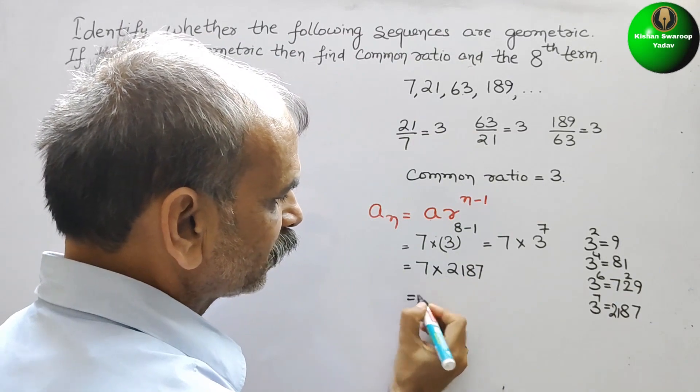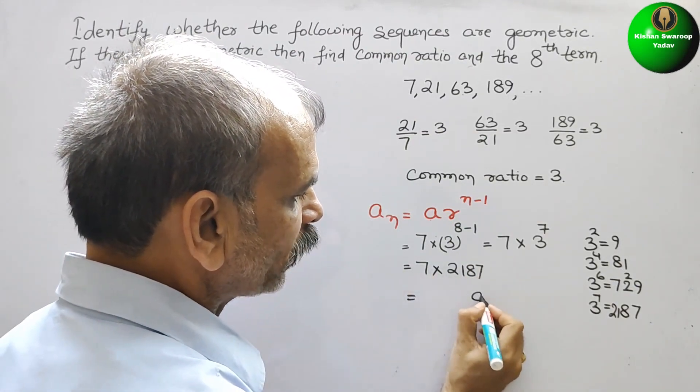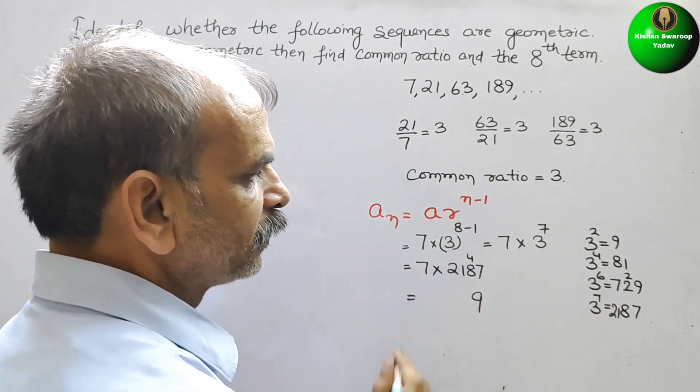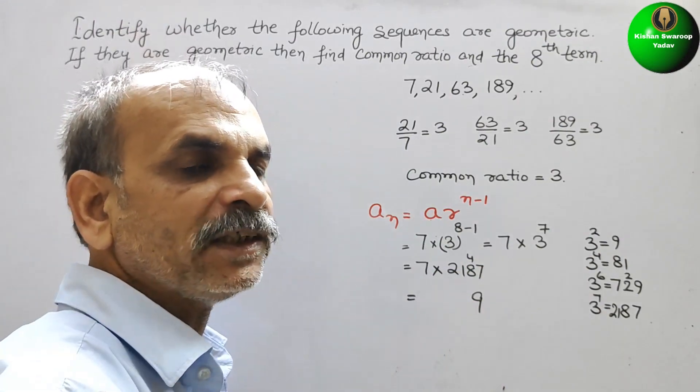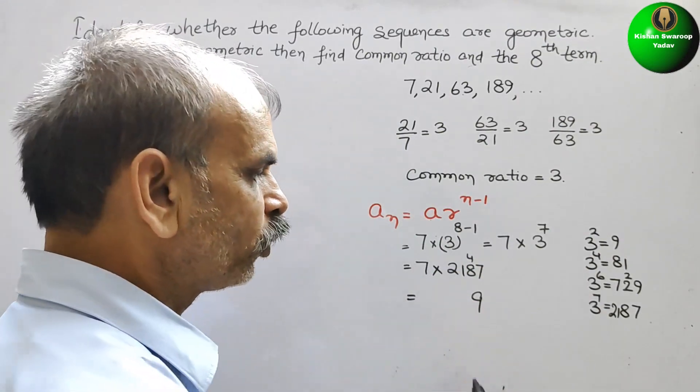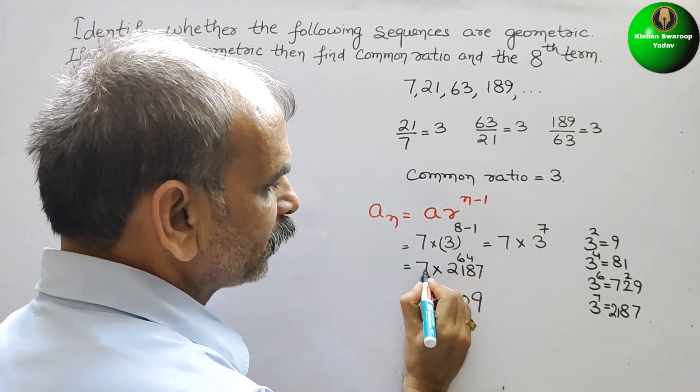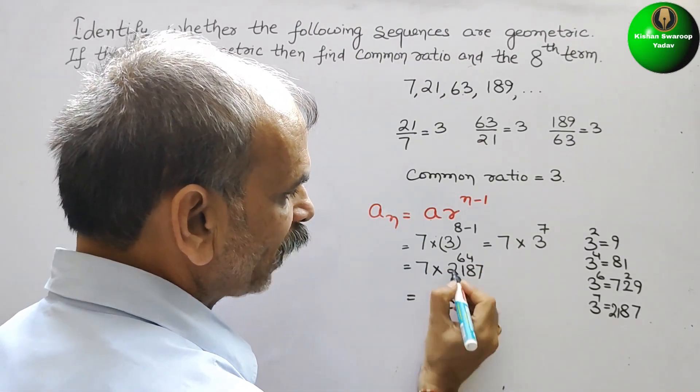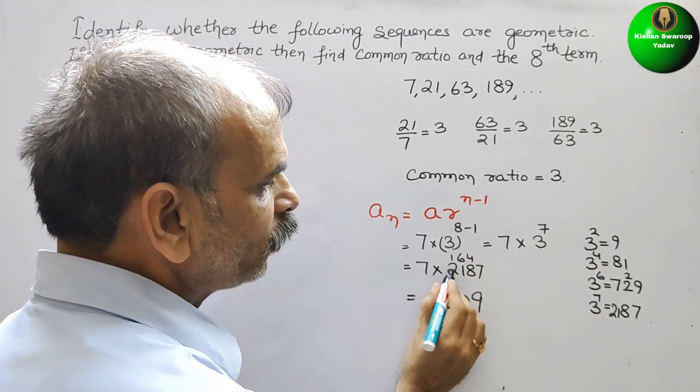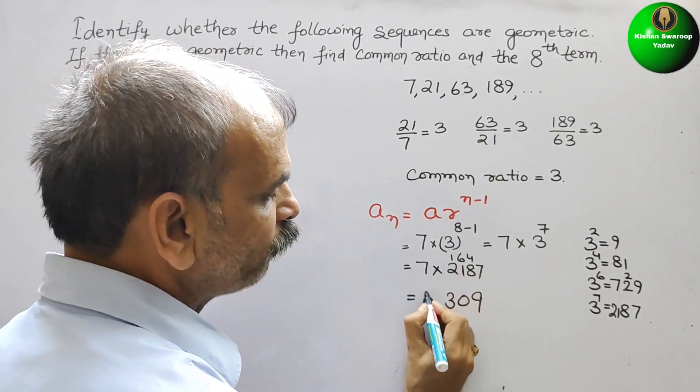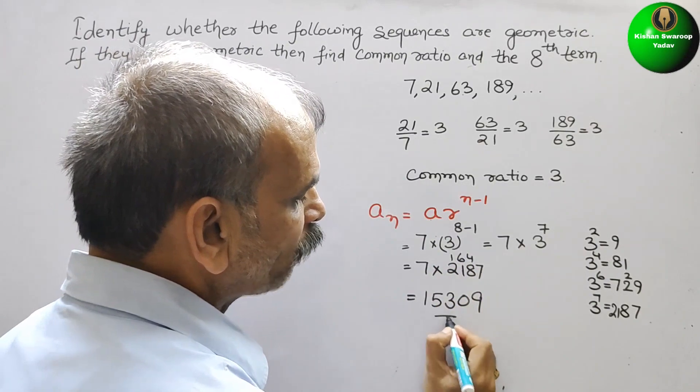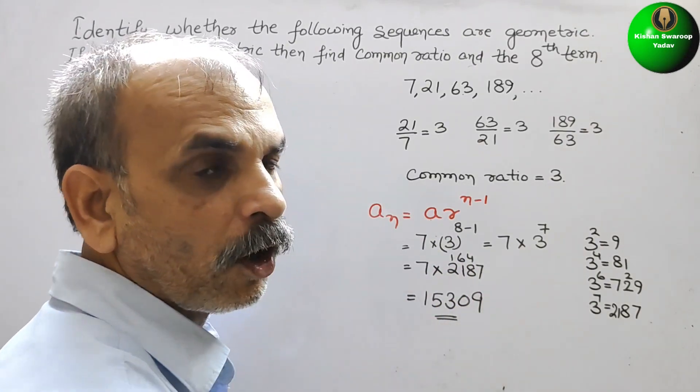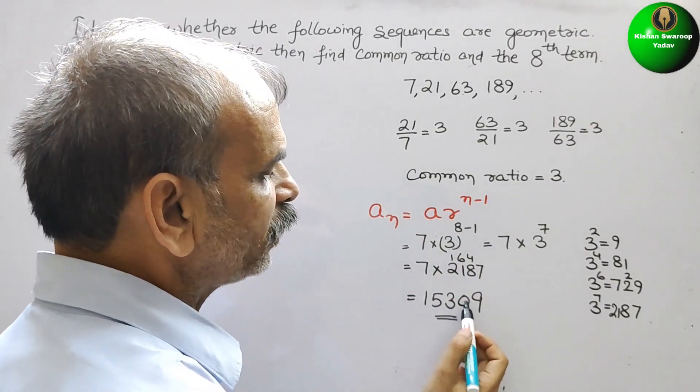Now, multiply this. 7 into 7 is 49, 4 carry. 7 into 8 is 56, 56 plus 4 is 60, 6 carry. 7 into 1 is 7 plus 6 is 13, 1 carry. 7 into 2 is 14 plus 1 is 15. Therefore, your 8th term of GP is 15309.